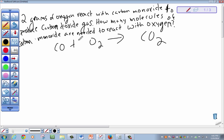We first need to see if this equation is balanced. We find that we have one carbon on each side and three oxygens on our reactant side and two on our product side. So we need to balance this equation before we begin with the stoichiometry problem.